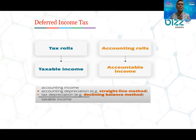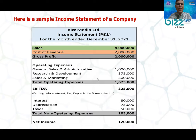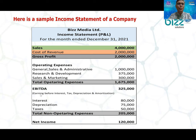Moving to the income statement, there are different types and different texture matters to consider. The income statement structure is: Sales less Cost of Goods Sold gives Gross Profit. Operating expenses include general, sales and administrative expenses, research and development, sales and marketing, and administrative expenses. From this we can derive EBITDA — earnings before income tax, depreciation, and allowance.